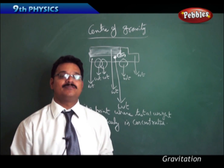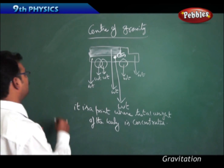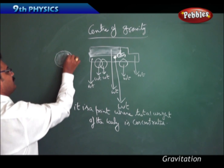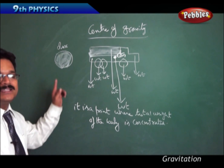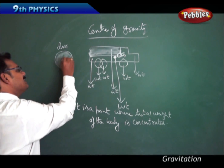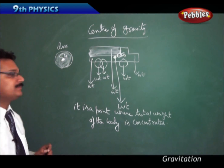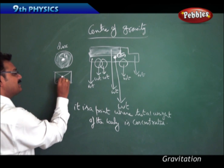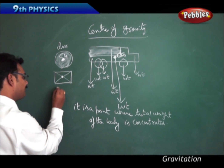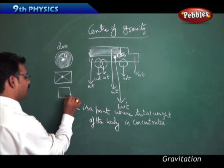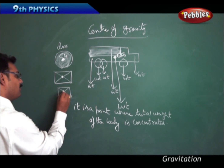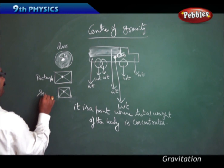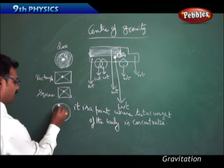For regular bodies, finding the center of gravity is simple. Take a circular disc — the center of the disc is the center of gravity. Take a rectangular box — the center of gravity is the intersection of the diagonals of the rectangle. Take a square — same answer: the intersection of the diagonals is the center of gravity.